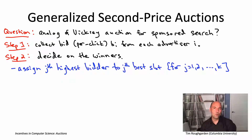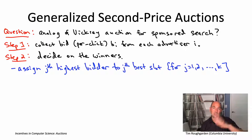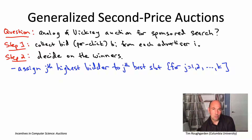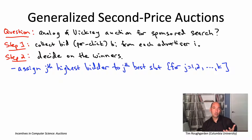Step two — deciding who wins — felt pretty obvious in the single item auction: just give it to the highest bidder. It feels pretty obvious here in the sponsored search auction too: go through the bidders from high to low bids and give them the best to worst slots in that order. That is indeed what is done. In a single item auction, all the complications were in what the pricing rule should be. We want an analog of the Vickrey auction — a truthful auction. But having only specified the allocation rule, we cannot yet comment on whether we have a truthful auction, because we haven't specified the payments.